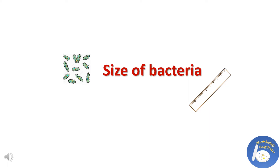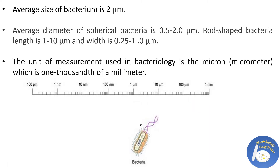Like us, bacteria also possess cells, but their cells are different from ours. Bacterial cells differ in size, shape, and arrangement. The average size of a bacterium is 2 microns. The average diameter of spherical bacteria is 0.5 to 2 microns. The length of rod-shaped bacteria is 1 to 2 microns and the width is 0.25 to 1 micron.